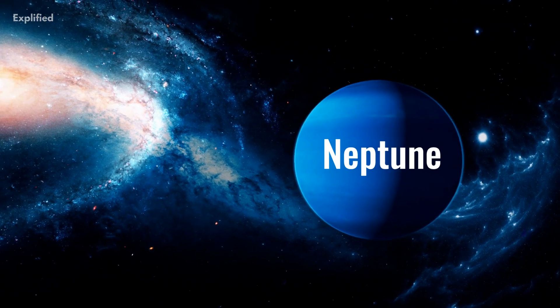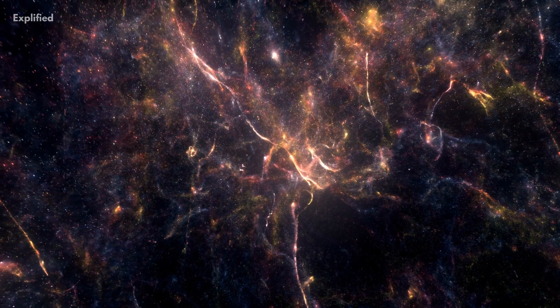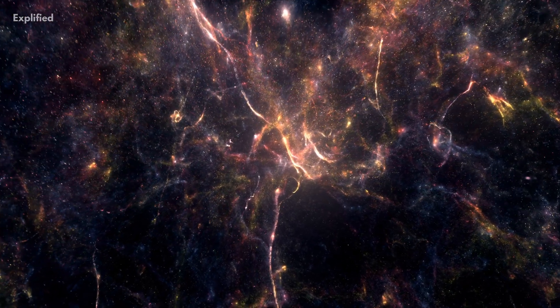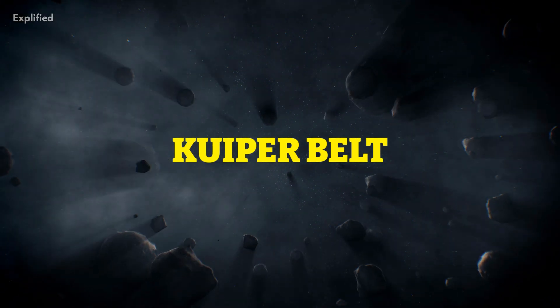Beyond Neptune, the most distant planet from the Sun, there lies a dark and mysterious realm filled with millions of icy objects. This is the Kuiper Belt and it is located at the very edge of our solar system.